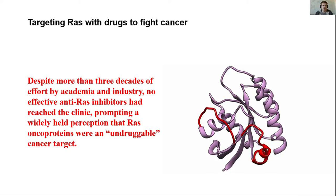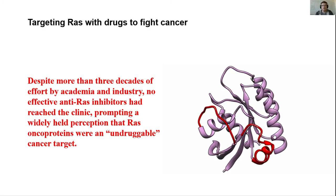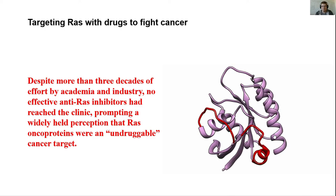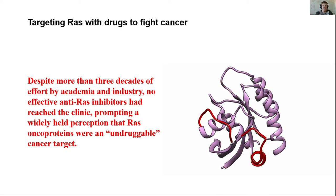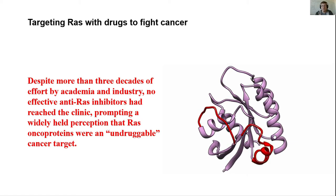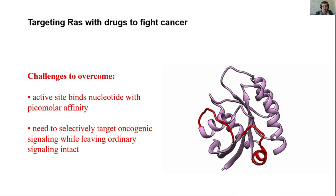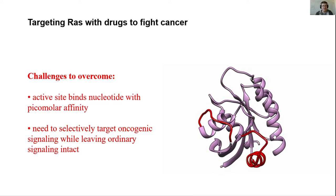But what about the goal of eventually targeting RAS with drugs to fight cancers? As we said, 95% of people with pancreatic cancer have a mutation in RAS. Despite more than three decades of effort by academics and pharmaceutical companies, no effective anti-RAS inhibitors had reached the clinic, and people developed a mindset that RAS oncoproteins were something you just couldn't develop drugs for. There are real challenges: the active sites of these GTPases bind nucleotide with really high affinity, so you're not going to be able to stick something else into that nucleotide binding site to act as an inhibitor.